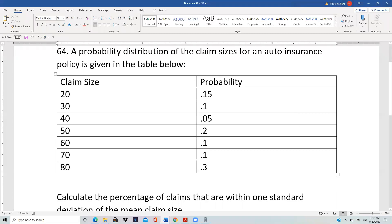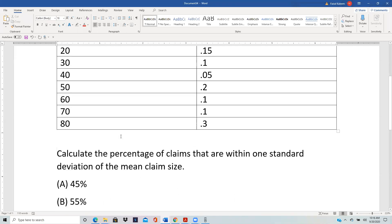Probability distribution of the claim sizes for an auto insurance policy is given in the table below. Calculate the percentage of claims that are within one standard deviation of the mean claim size.